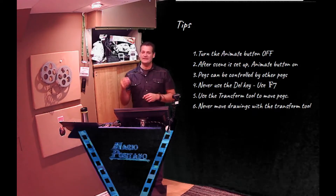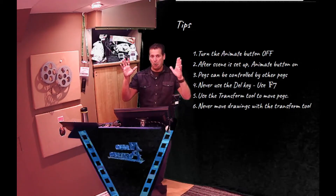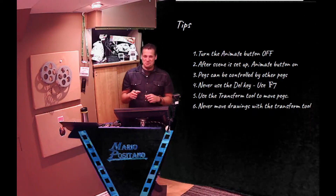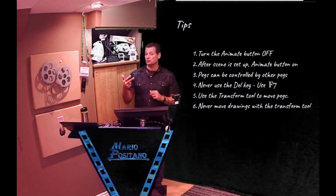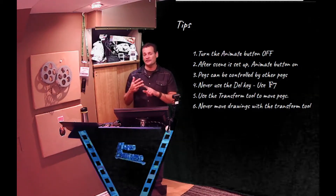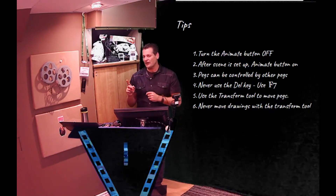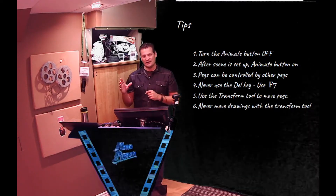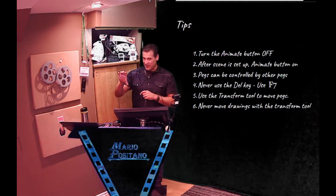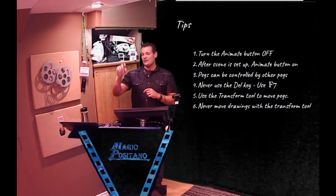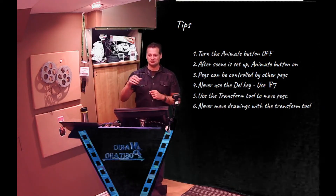Tip three: pegs can be controlled by other pegs. In my example, I have a car. The body, the tire, the rim, and the stripes are all different drawing layers. I have one peg moving all four layers. But I want the tire to turn, so I took the tire and put it on a peg and had it turn in place. Then I took that tire peg with the tire attached and attached it back to the car. That way, the car peg can control the tire peg — so when I move the car, the tire moves with it.